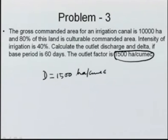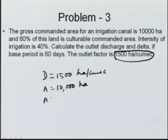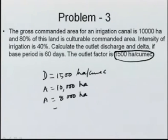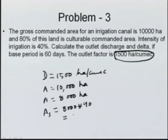The culturable commanded area is 80 percent of 10000 hectare, which is 8000 hectare. Intensity of irrigation is 40 percent, so the irrigated area = 8000 × 0.4 = 3200 hectare. This 3200 hectare is the area A to be used in further calculations.